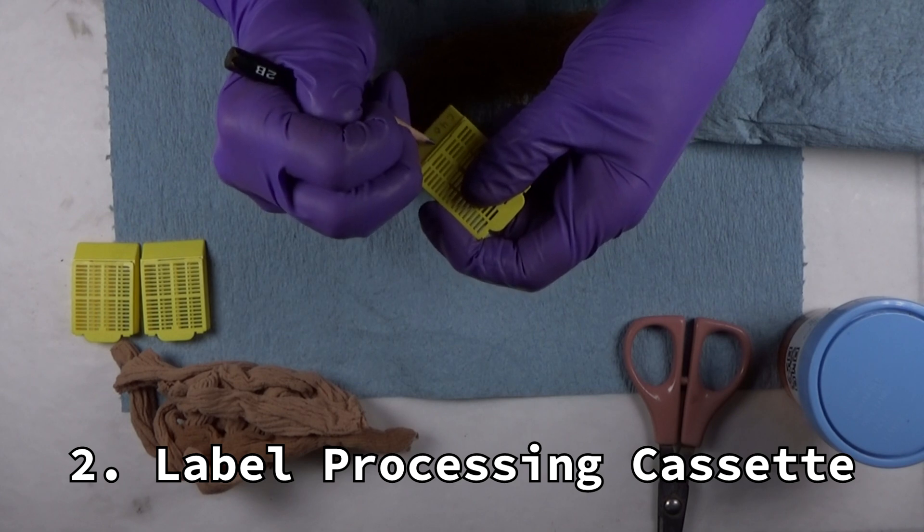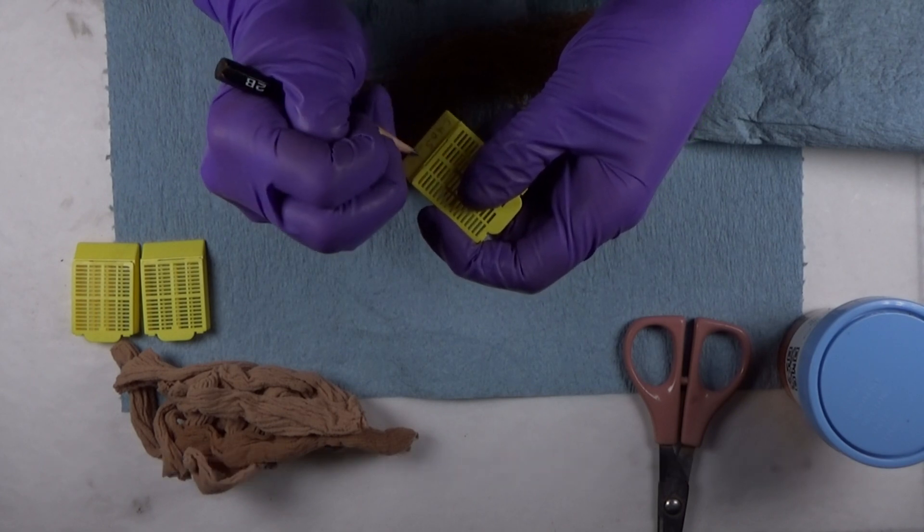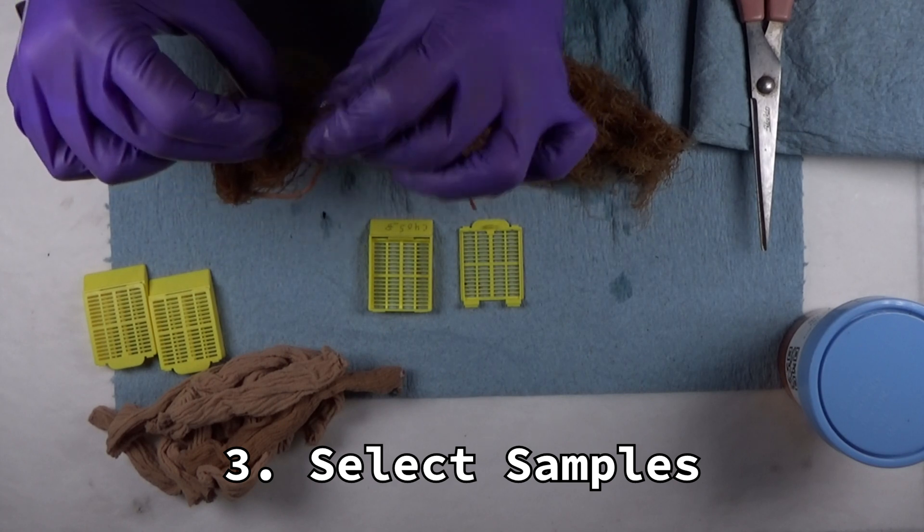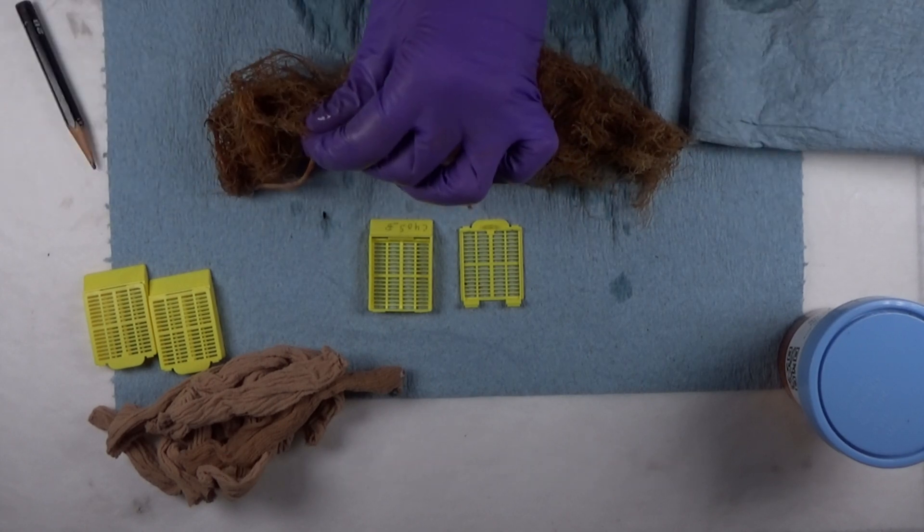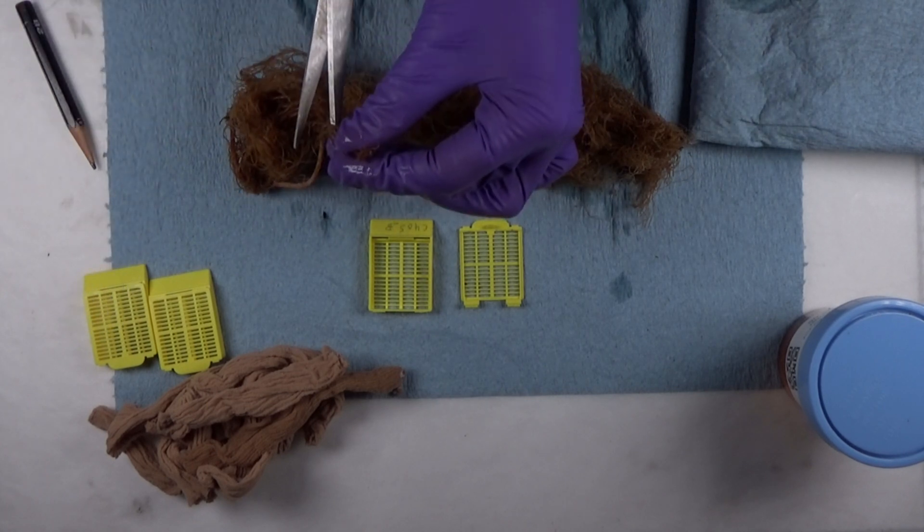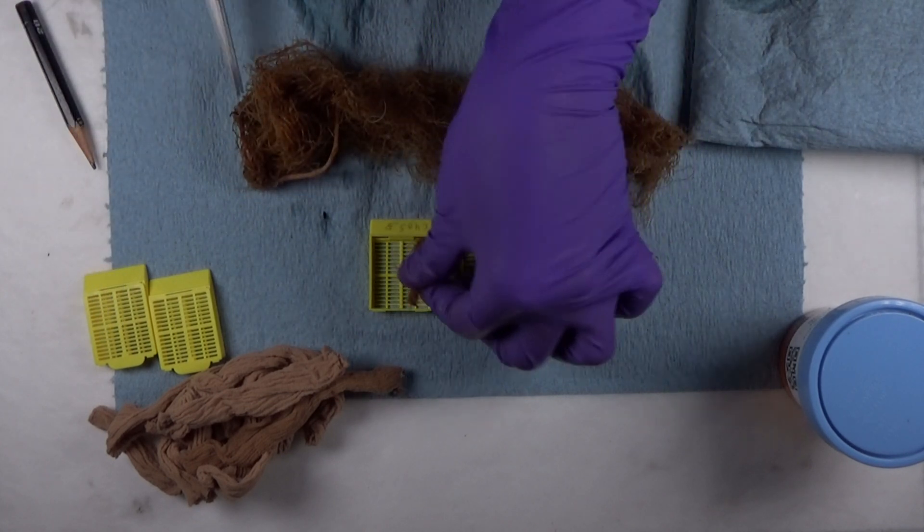Then label a tissue processing cassette in pencil with a unique label for your sample. Select patches of thin roots from a few different places. For these sized cassettes, I twisted and cut out three approximately one and a half centimeter cuttings. Then place the roots in the cassette.